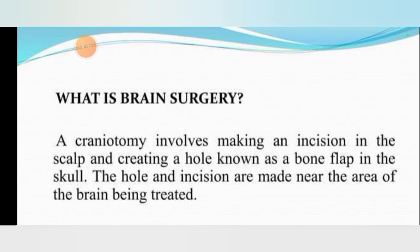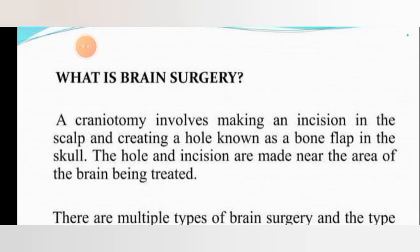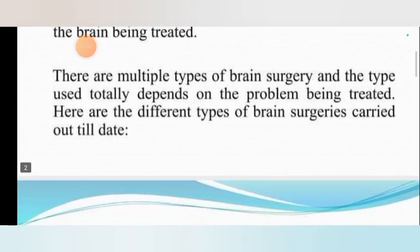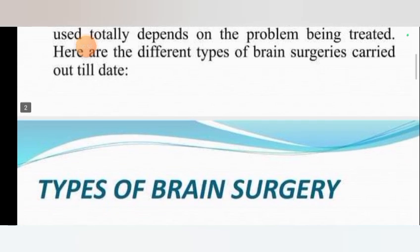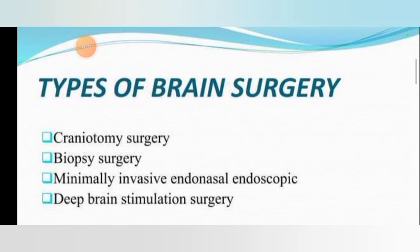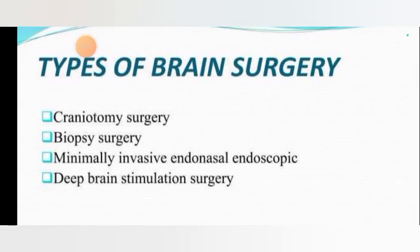What is brain surgery? Craniotomy involves making an incision in the scalp and creating a hole known as a bone flap in the skull. The hole and incision are made near the area of the brain being treated. There are multiple types of brain surgery and the type used totally depends on the problem being treated.